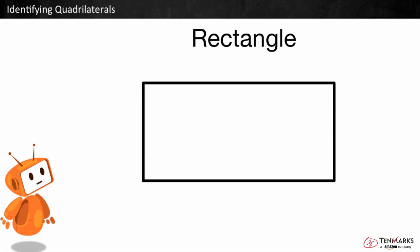This is a rectangle. It has two pairs of opposite congruent sides, or two sets of sides that have the same length.